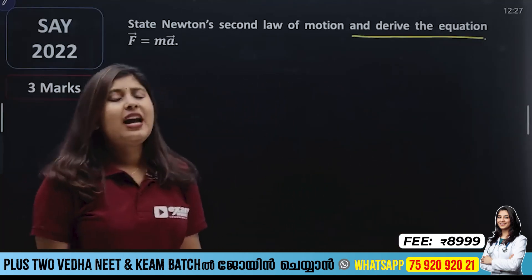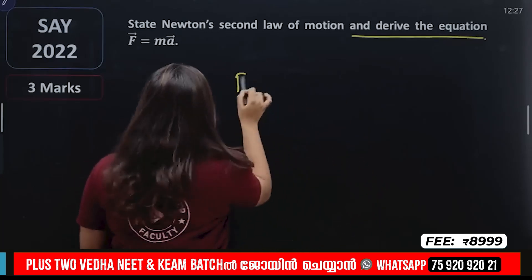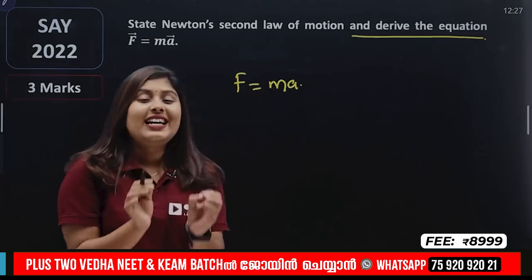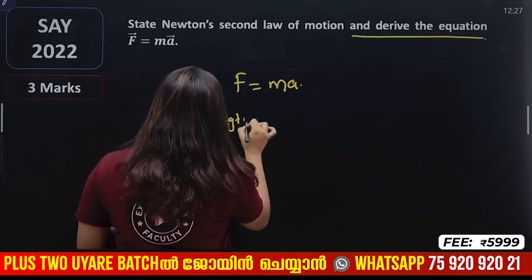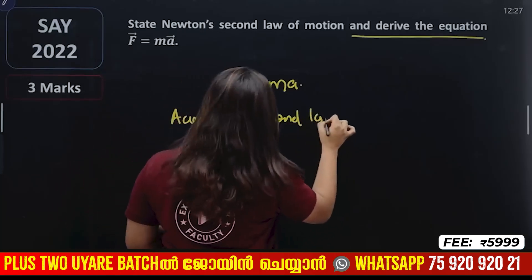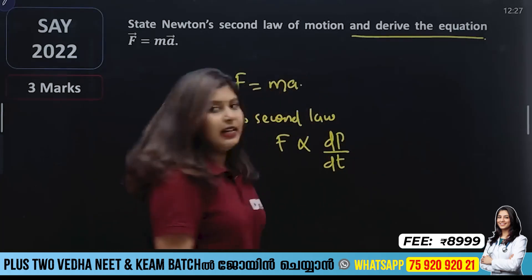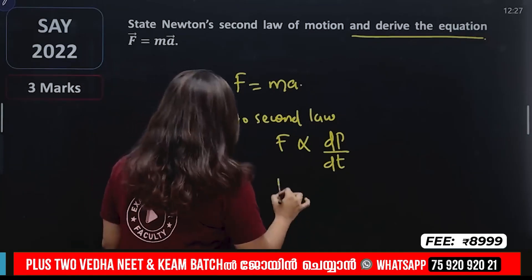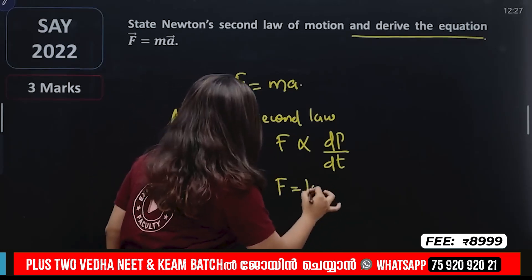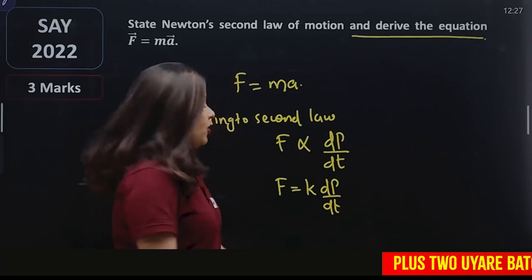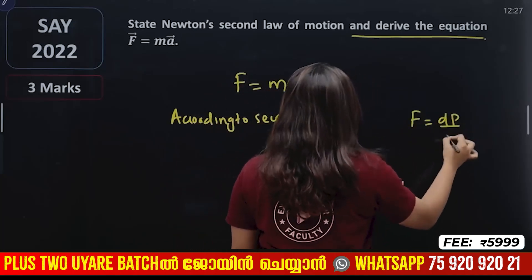According to the second law, external force is directly proportional to the rate of change of momentum. So F is proportional to dp by dt. With proportionality constant K equal to 1, F equals dp by dt.